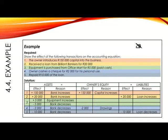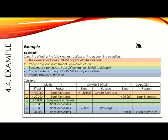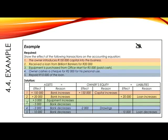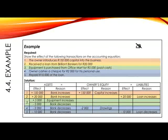Number 5: Repaid R10,000 of the loan. Hopefully you can see that this should be the reverse of when we originally took the loan out in number 2, as we are paying some of the money back. It tells us we repaid R10,000, so bank must be involved. The other account is loan, as this is the account referred to in the transaction. Bank is an asset, so in assets we show minus R10,000 for bank decreases. Loan is a liability, but since we are paying the money back, we owe less than before. So in liabilities we show minus R10,000 as loan decreases. We check that our equation balances: minus R10,000 equals minus R10,000.